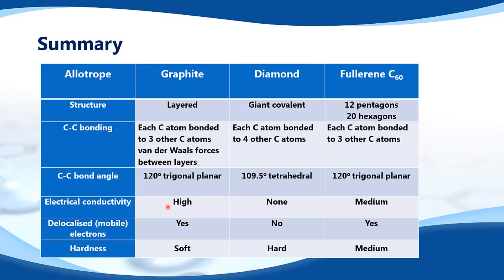Electrical conductivity: graphite is high, diamond has none, and fullerene is medium. Regarding delocalized or mobile electrons: graphite has yes, diamond has no, and fullerene C60 has yes. Finally, hardness: graphite is very soft because the layers can slide over each other, diamond is very hard, and fullerene is somewhere in the middle.